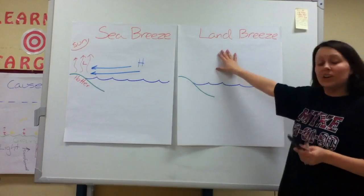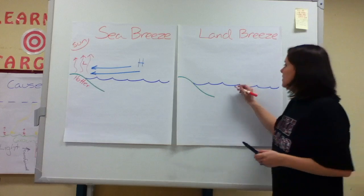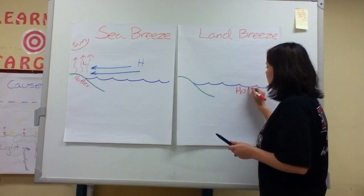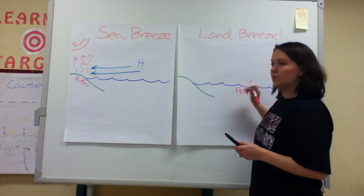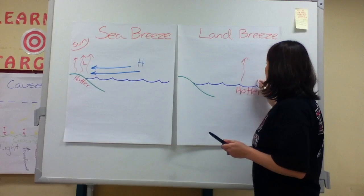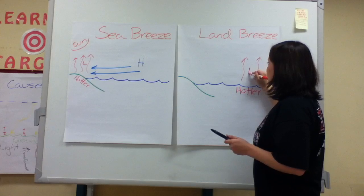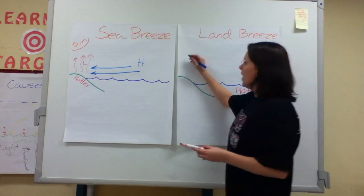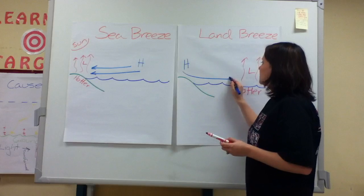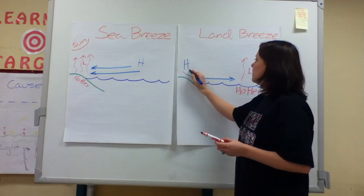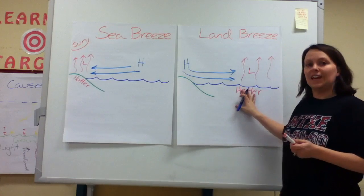Now, at night, the sun isn't out, so the land begins to cool down. This means that the ocean is hotter than the land. So the air above the ocean begins to heat up and rise. Again, this creates a low pressure system. That means that rising air's got to have something fill the space, and it's the cool air coming off the land. This is a land breeze.